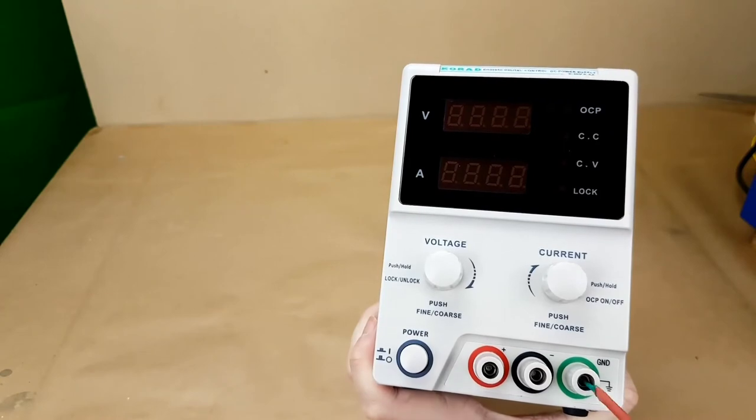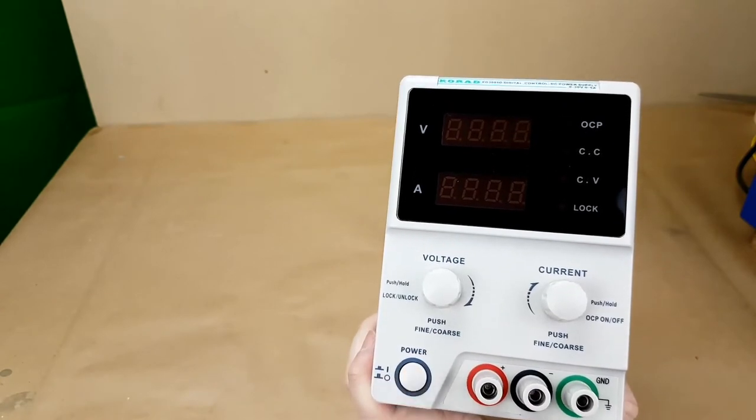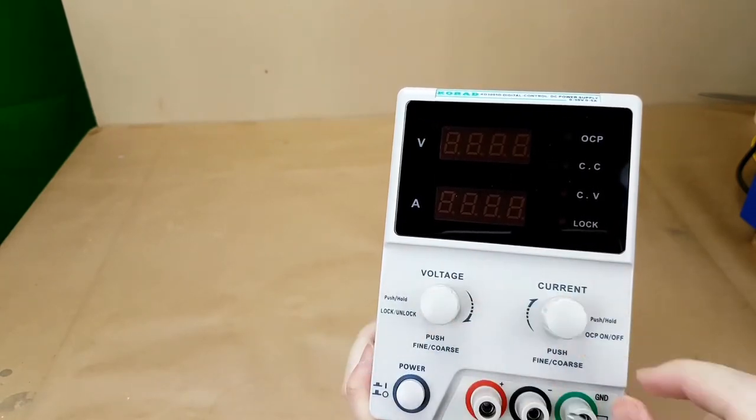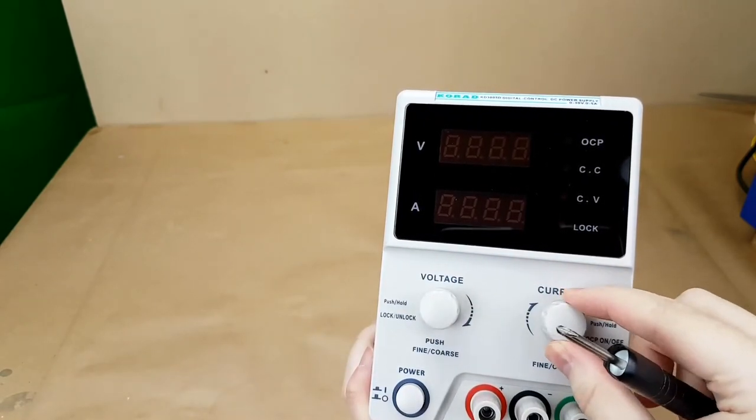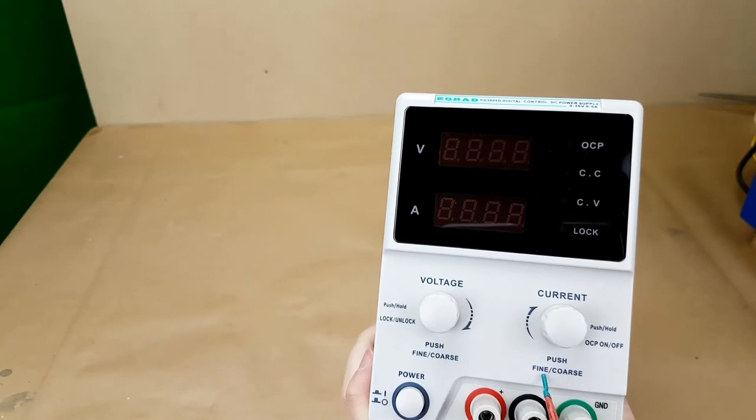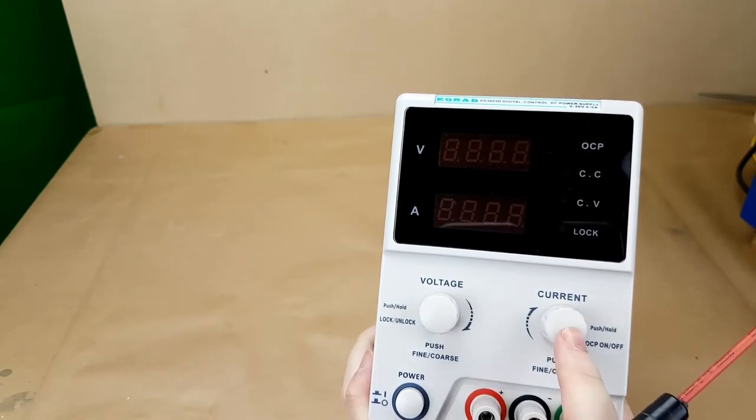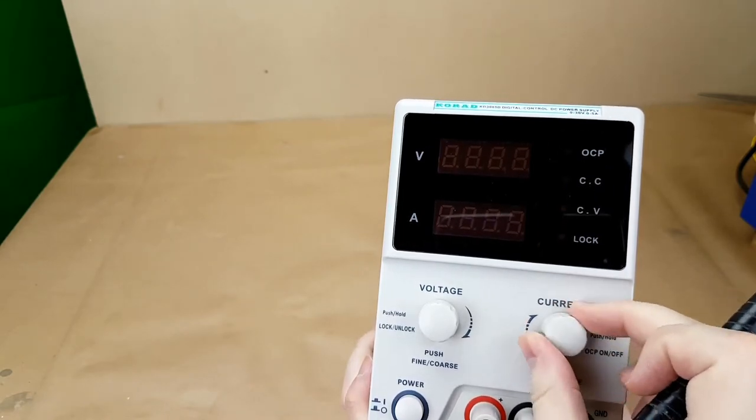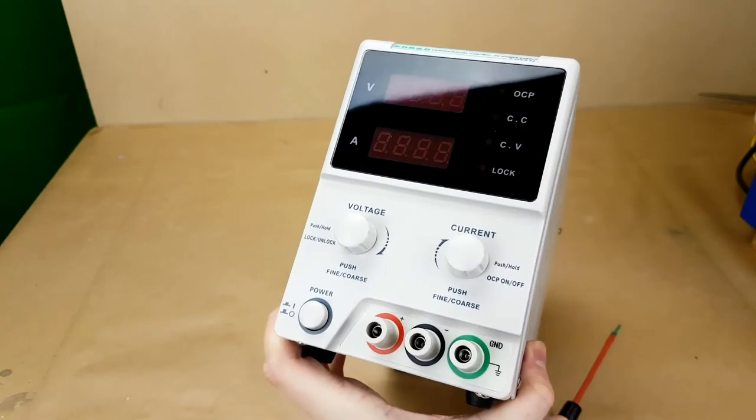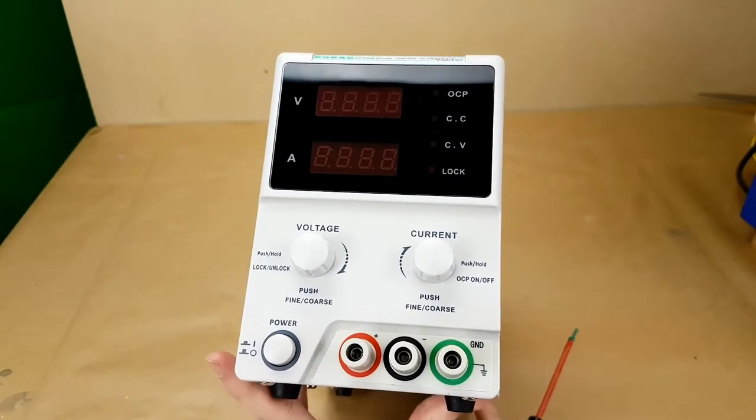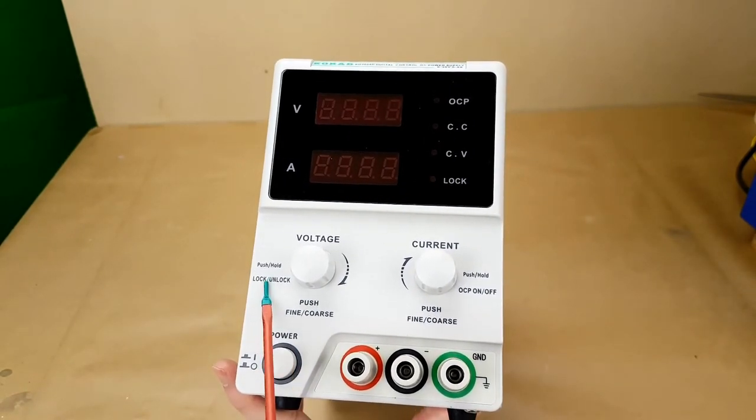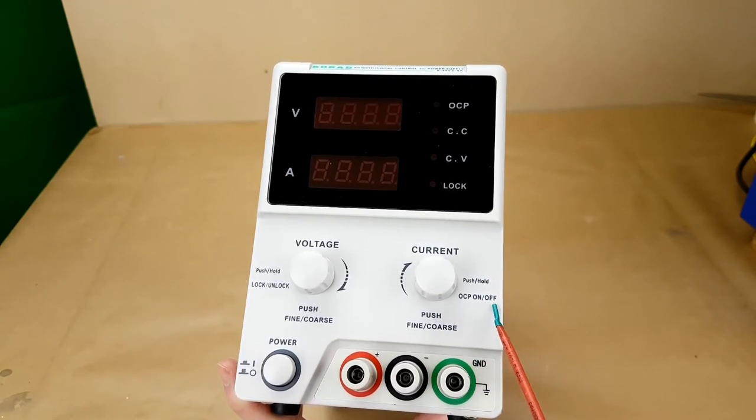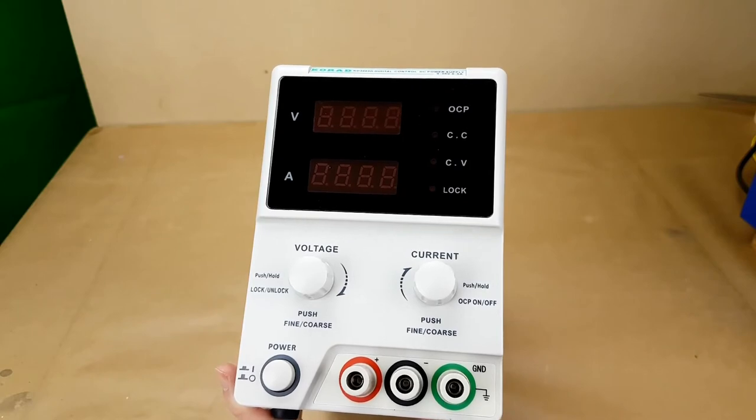Aside from that, it's just banana jacks on the front. Power on off button. Current knob. Voltage knob. Says push, fine, slash, coarse. So I assume when you push this in, it will change it from being fine to coarse or vice versa. Push and hold to lock, unlock. Push and hold, OCP on, off. Over current protection on, off. Interesting.